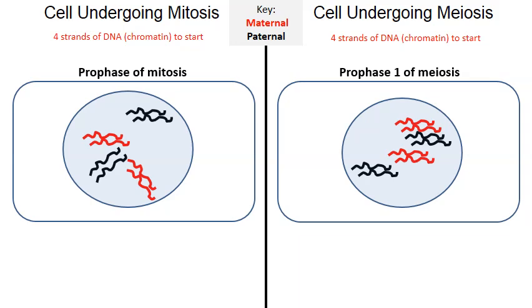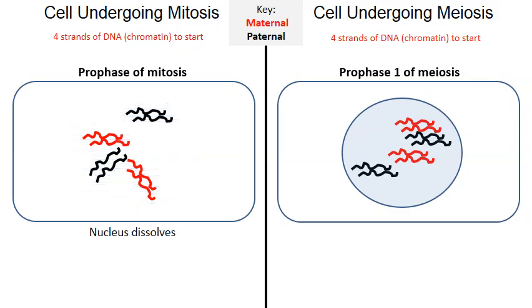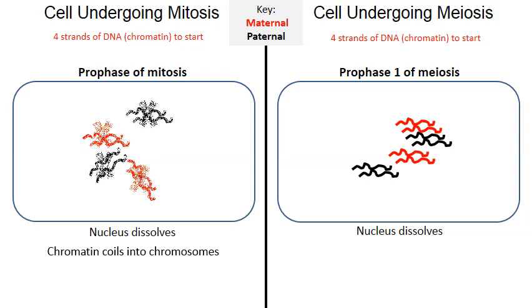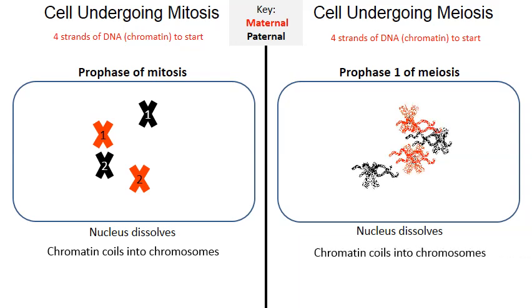As we move into prophase of mitosis on the left, the nucleus will dissolve. In prophase one of meiosis on the right, the same thing happens — the nucleus dissolves. So far there's really no distinction between the two. In prophase of mitosis the loose linear versions of DNA called chromatin coil into these X-shaped structures called chromosomes, and on the right-hand side the same thing happens — the chromatin coils into chromosomes.